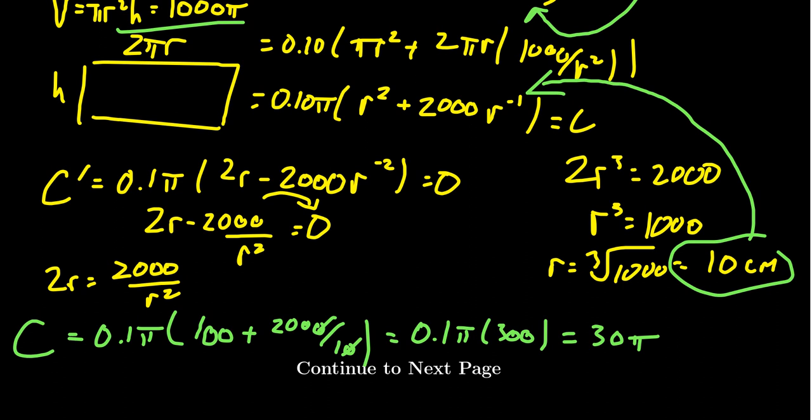What are the units? Since I used 0.1 for 10 cents, I'm working in dollars. The final answer is 30π dollars. If you want cents, multiply by 100 to get 3000π cents, but 30π dollars is the typical way we express currency. If you have a calculator, you could multiply 30 by π and round to two decimal places. But if you don't have a calculator, you can leave it exact as 30π dollars.